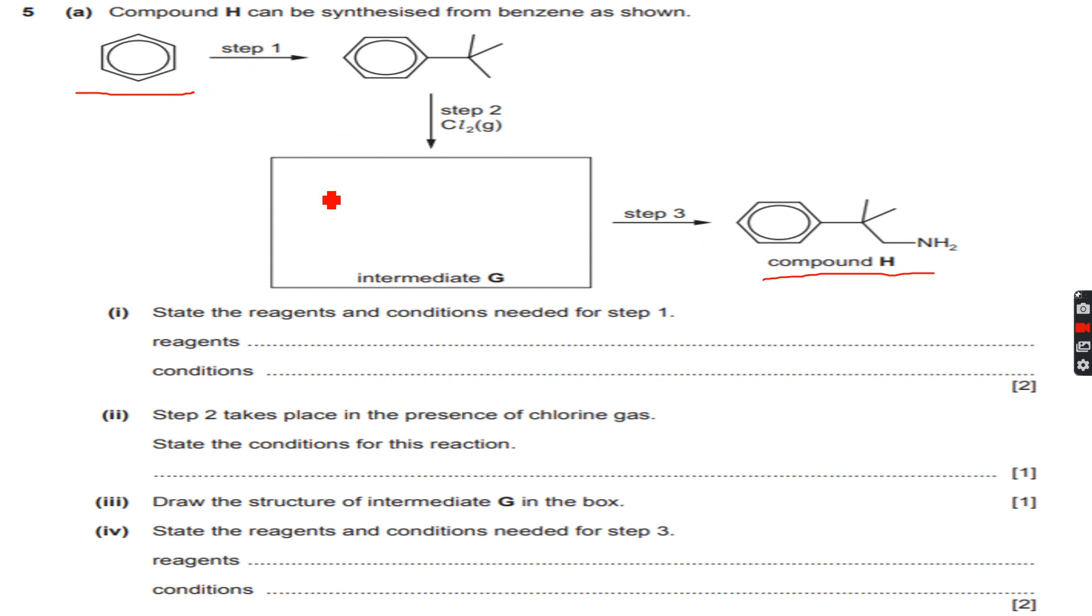Let's see step one. The first part asks: state the reagents and conditions needed for step one. We are adding an alkyl side chain to the benzene ring, so we'll have to do the Friedel-Crafts alkylation reaction. If you've seen my video on benzene and its compounds, I've talked about this reaction.